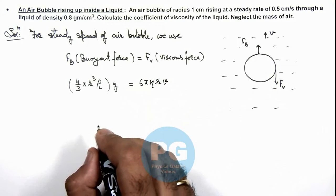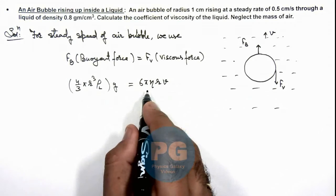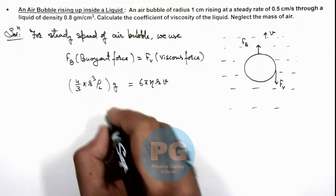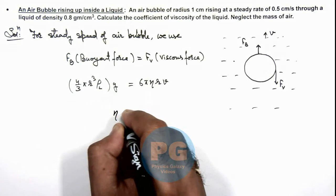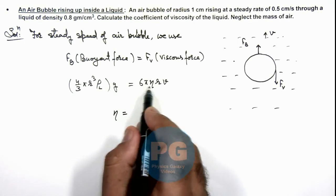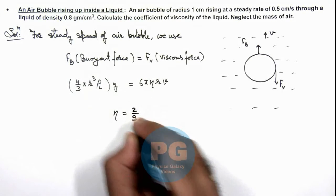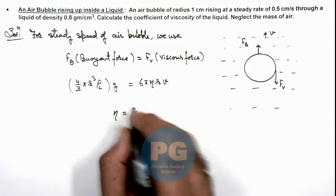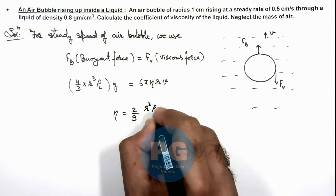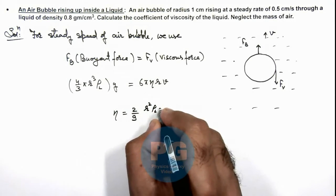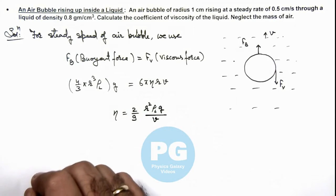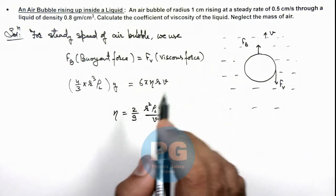Now, in this situation, if we calculate the numerical values here, π and r get cancelled out, and simplifying this we get the value of coefficient of viscosity. The coefficient of viscosity we are getting is 2/9 times r² ρ(liquid) multiplied by g, divided by the velocity of the air bubble with which it is rising up.